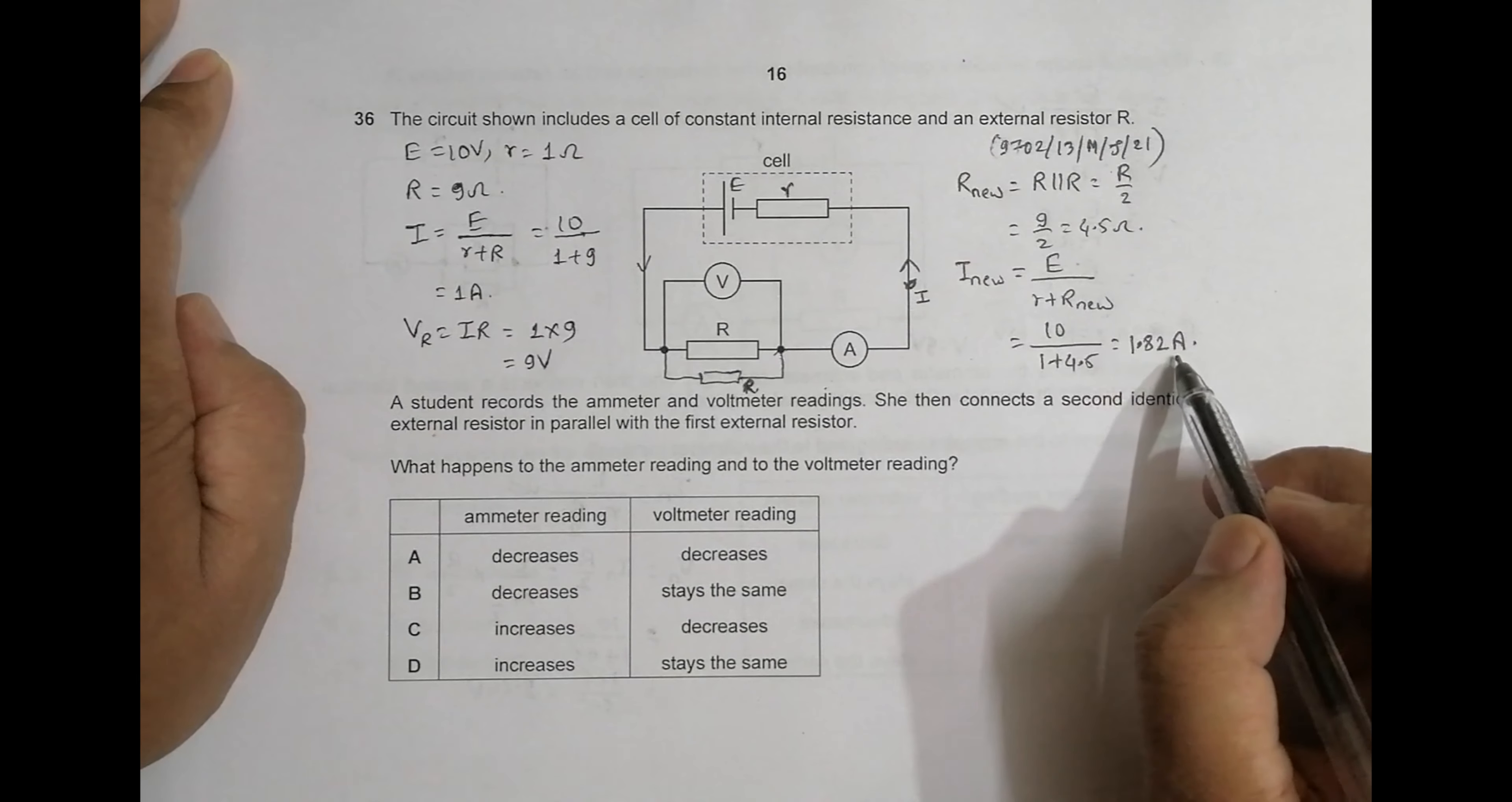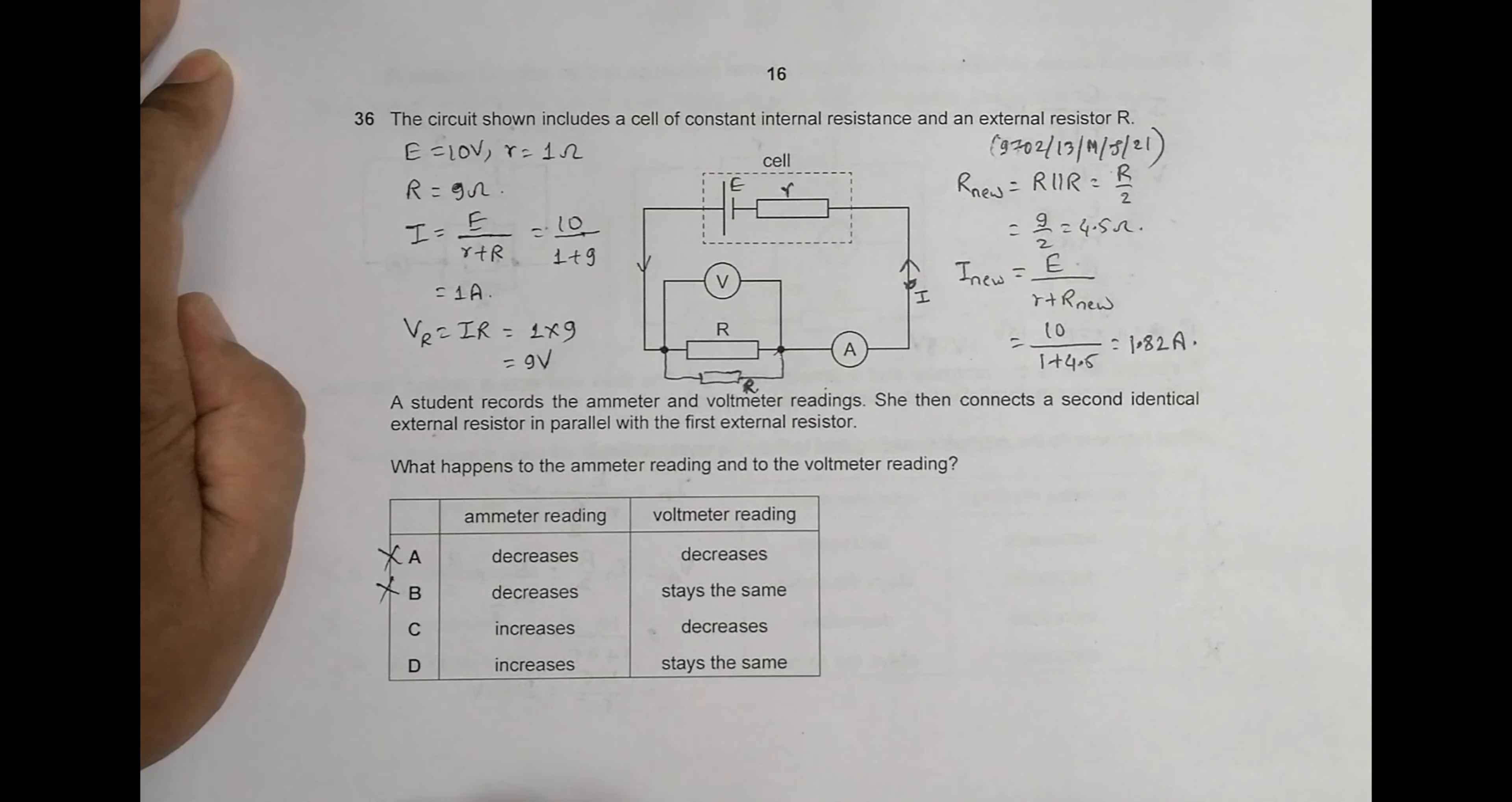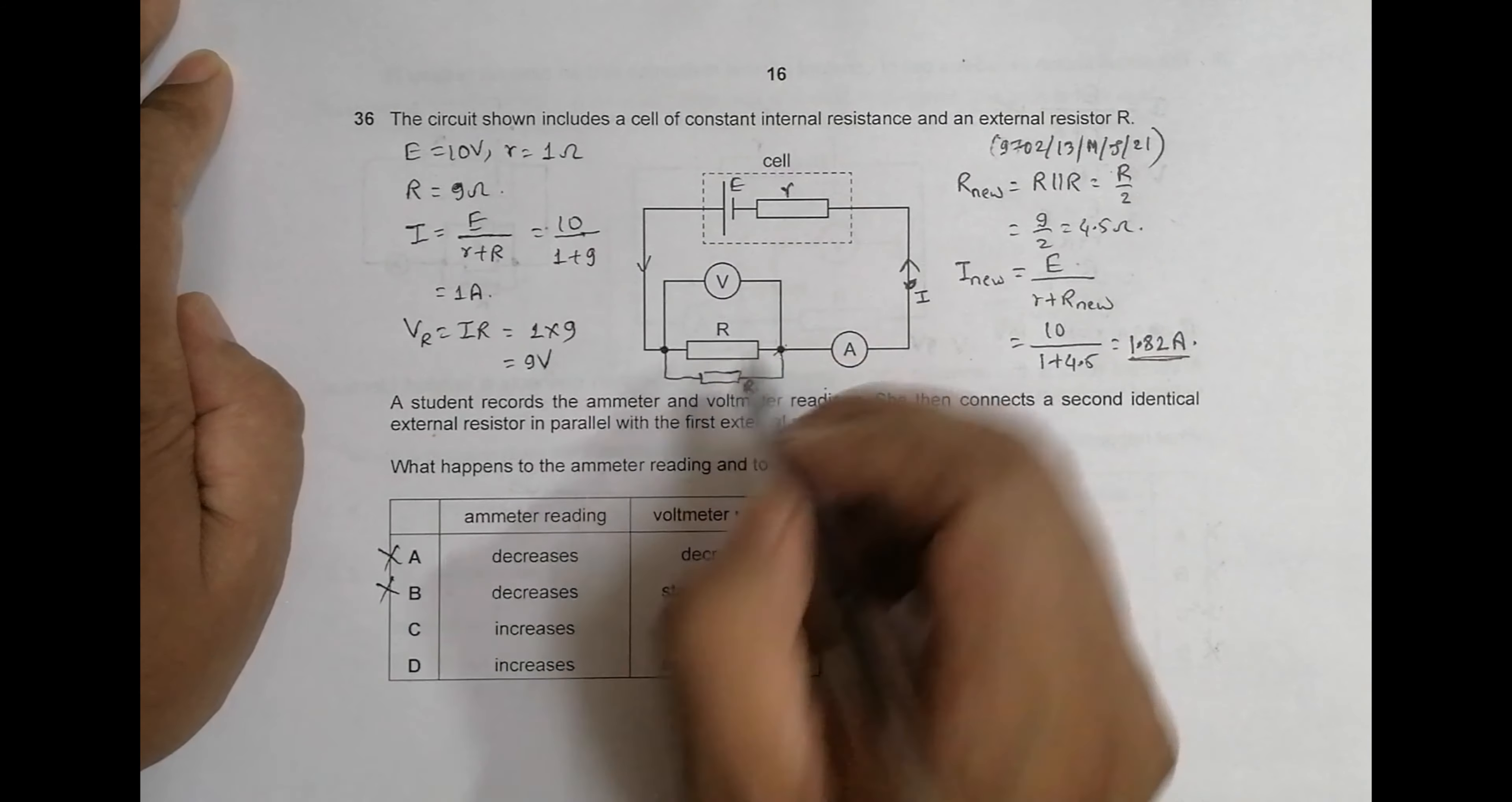That means these two choices disqualify because they state that ammeter reading decreases. Here we are getting an increase. This is I_new.